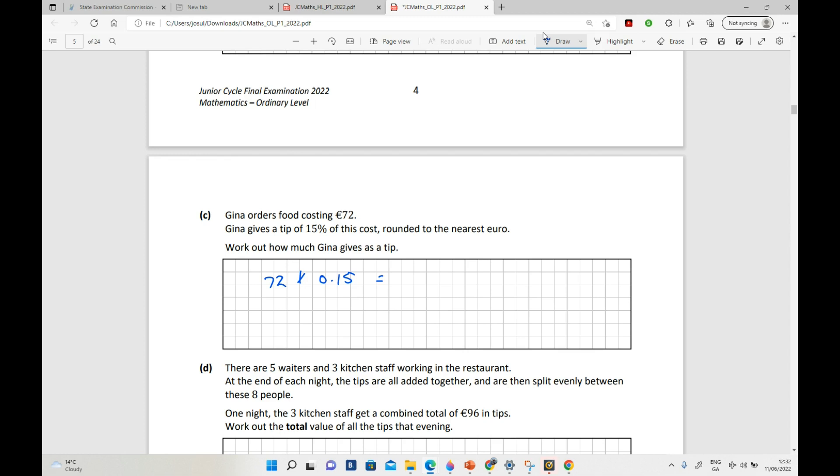But we've been told rounded to the nearest euro, so 10.80 is nearer to 11 euros than it is to 10 euros, so we're going to round that up to 11 euro. So that's the tip that Gina is going to give.